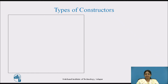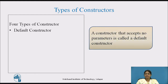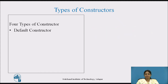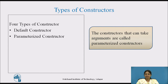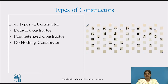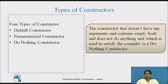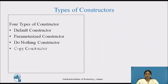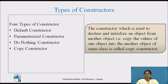Let us see the types of constructors. There are four types. The default constructor: a constructor that accepts no parameters. The parameterized constructor: a constructor that can take arguments. The do-nothing constructor: one that has no arguments, contains an empty body, does nothing, and is used to satisfy the compiler. And the last type is the copy constructor: used to declare and initialize an object from another object, i.e., copy the values of one object into another object of the same class.